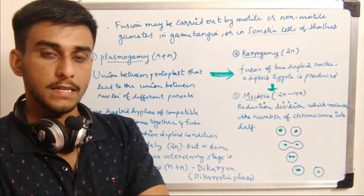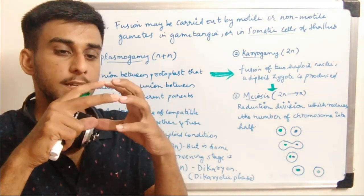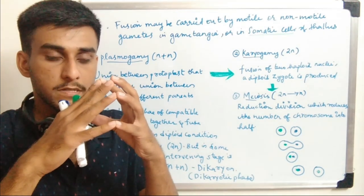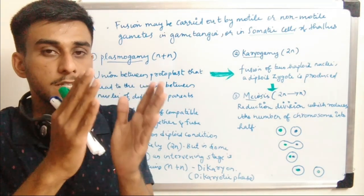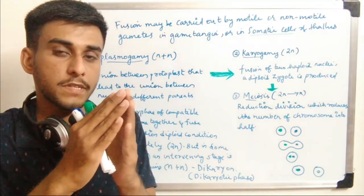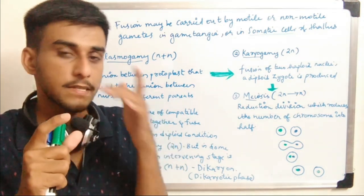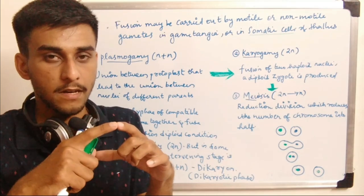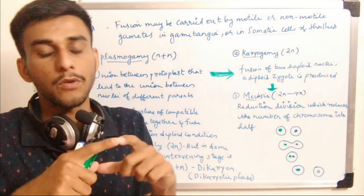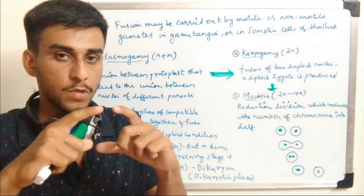During karyogamy, two haploid nuclei come together to form a diploid nucleus. The second step of karyogamy leads to the third step: the fused product undergoes reductional division known as meiosis. The diploid nucleus then forms haploid nuclei by the process of meiosis.